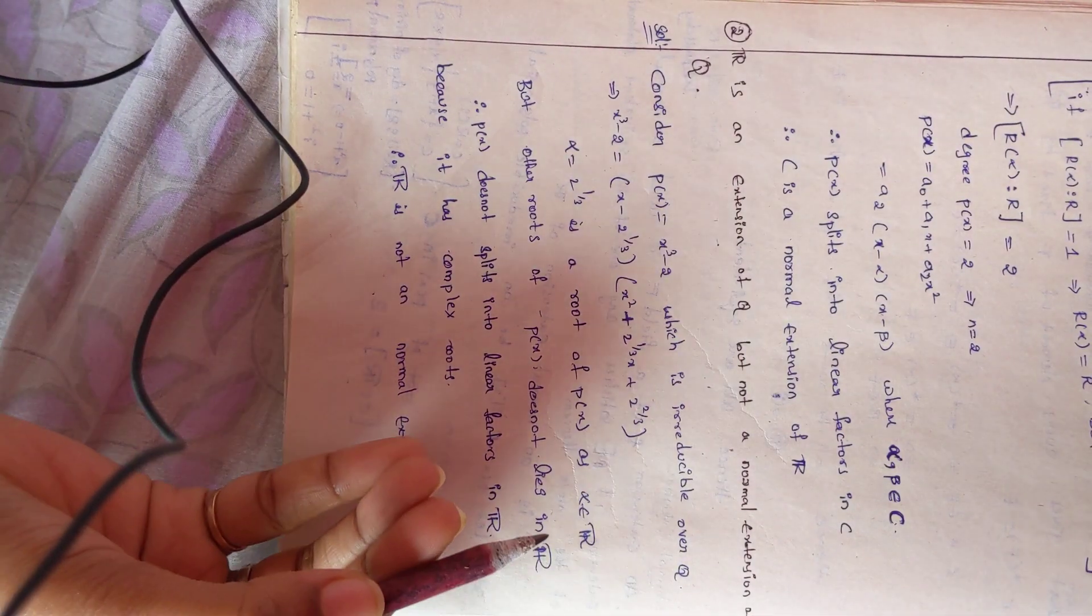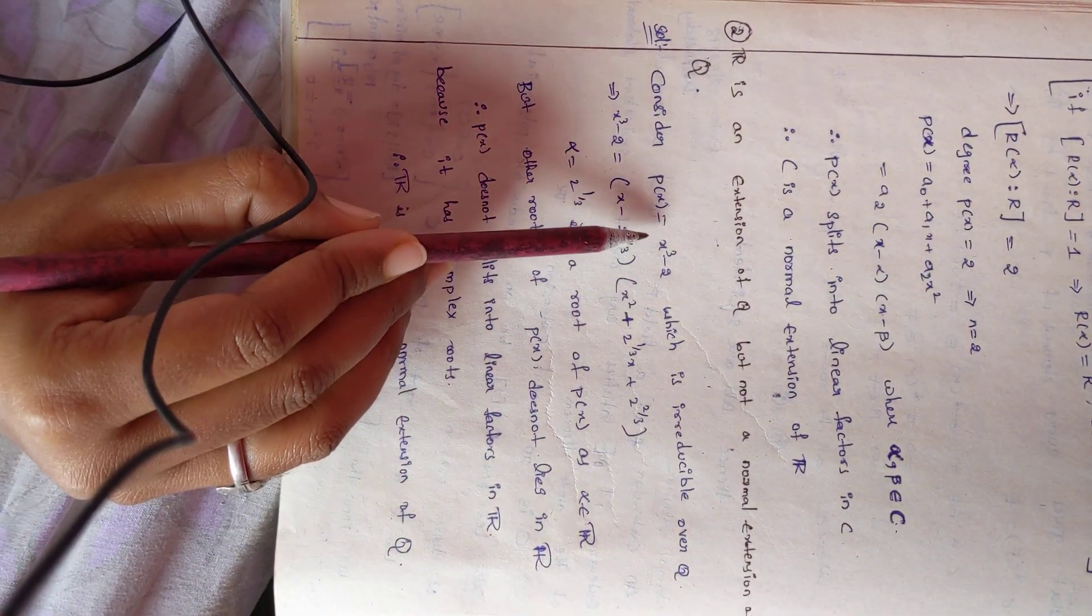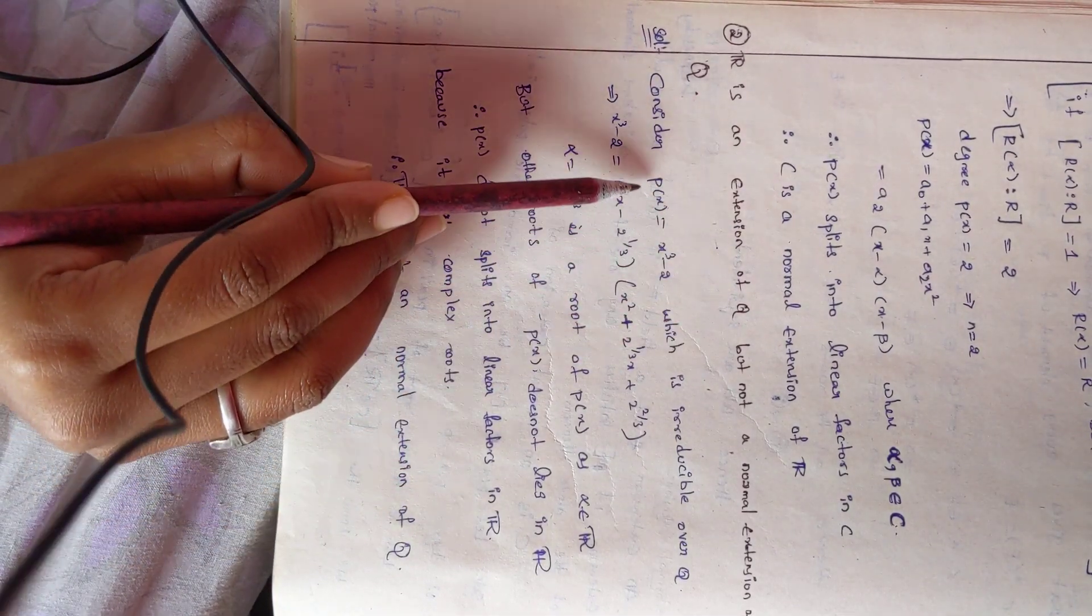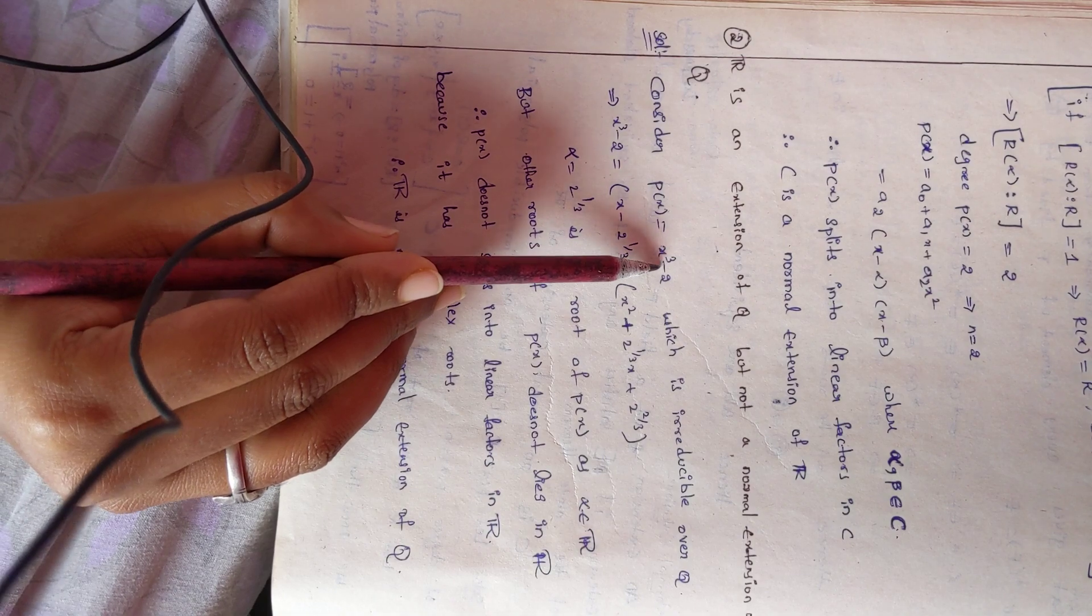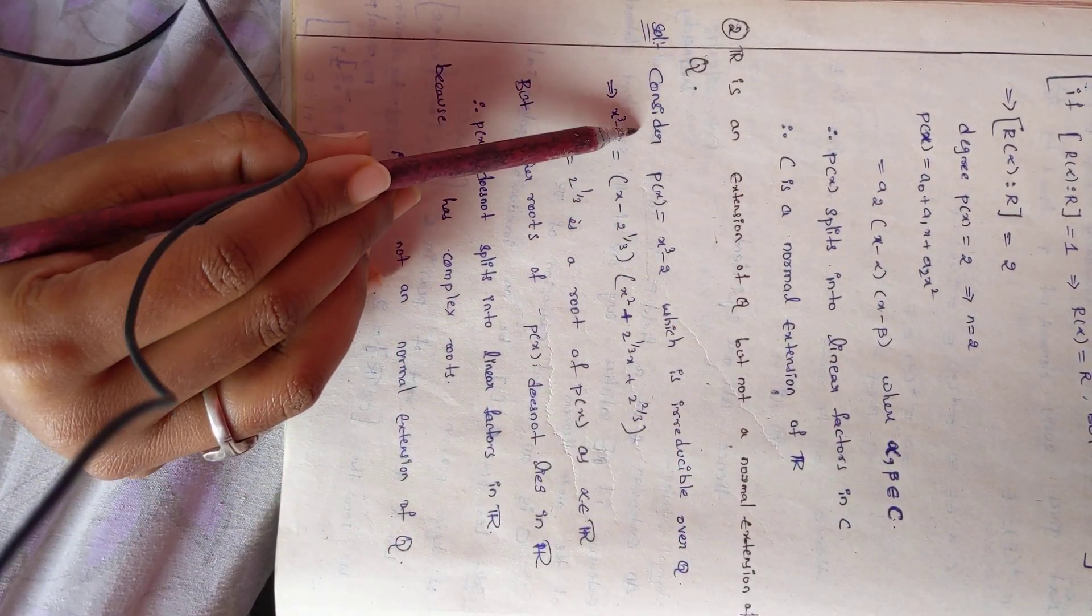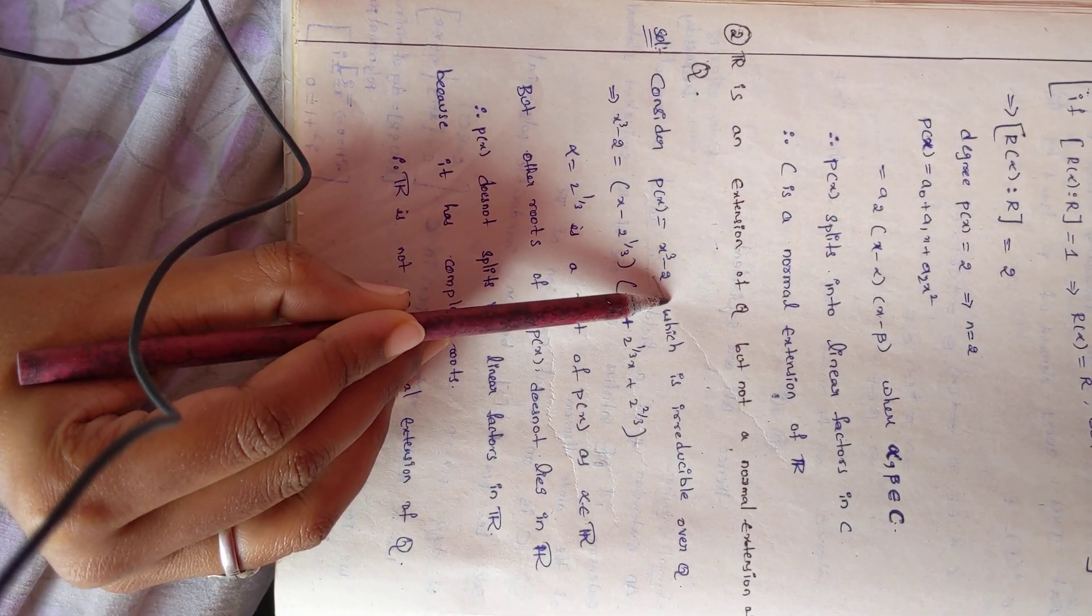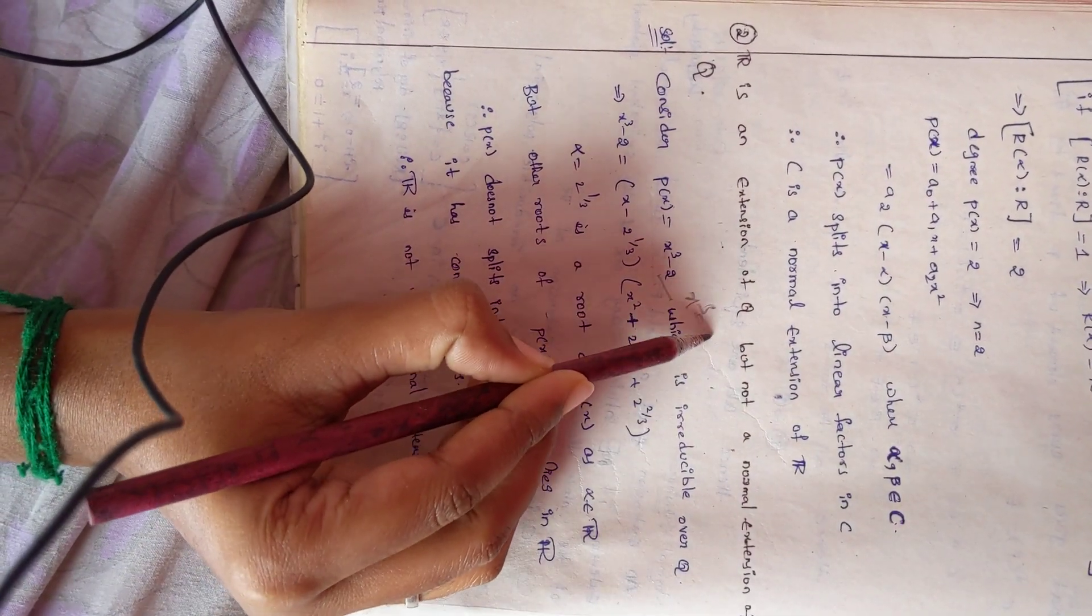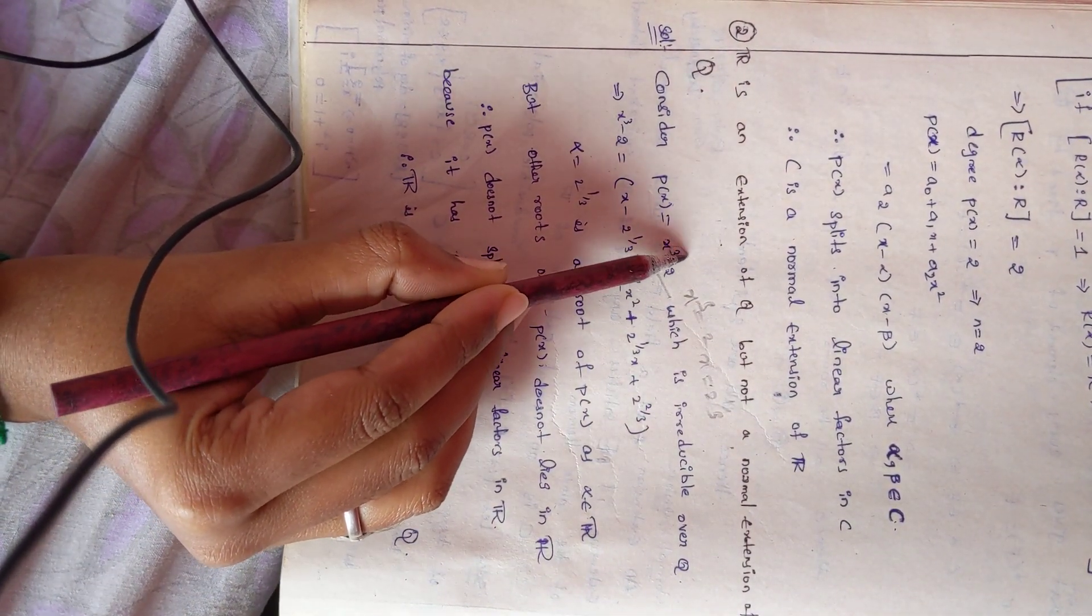An irreducible polynomial can be split into linear factors. Let P(X) = X³ - 2. This is directly irreducible. We have X³ = 2, so X = 2^(1/3). Actually X³ - 2 has three roots that exist.